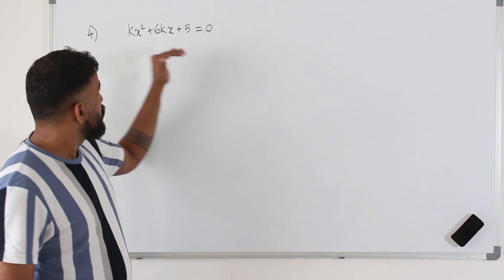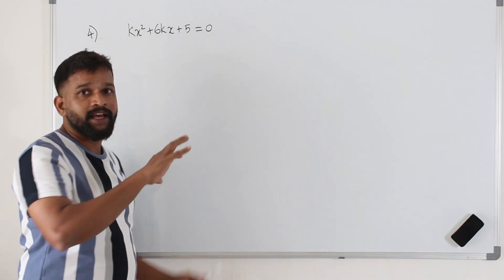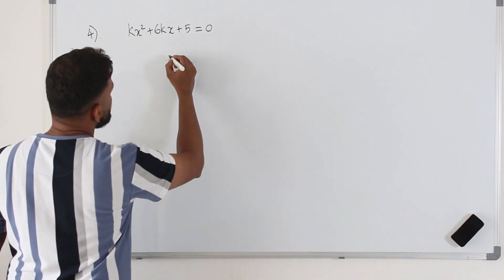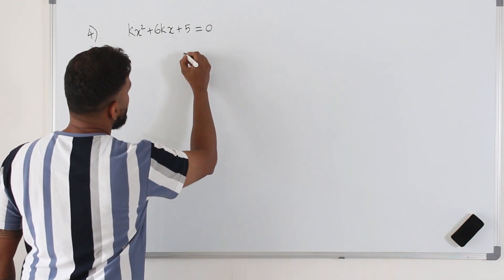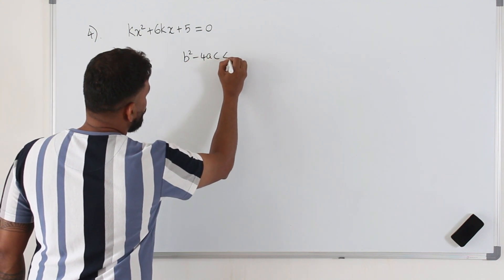Here, you are given a quadratic equation and the question says this quadratic equation has no real roots. You need to remember this: if the quadratic equation has no real roots, the discriminant should be a negative number.